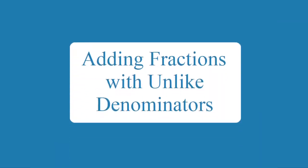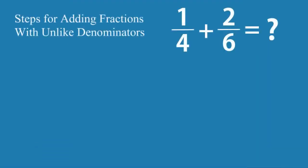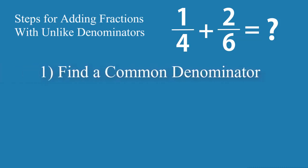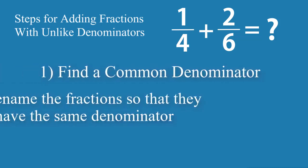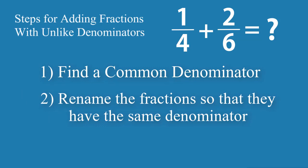Adding fractions with unlike denominators. There are three steps for adding fractions with unlike denominators. First, find a common denominator. Second, rename the fractions so that they have the same denominator. Third, add the like fractions.